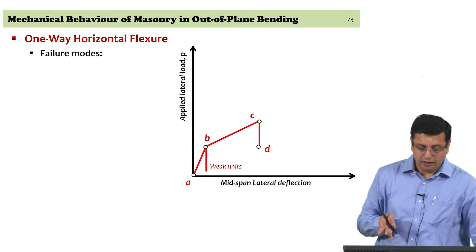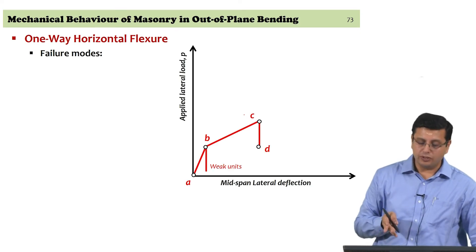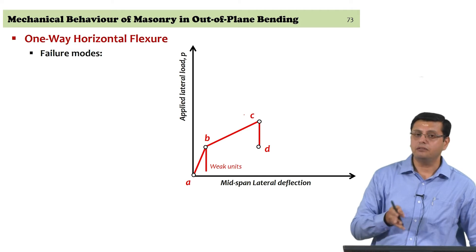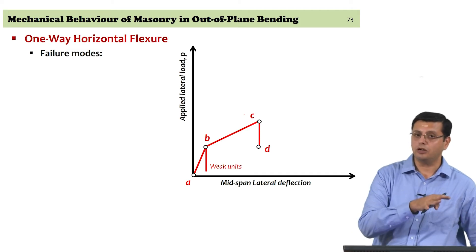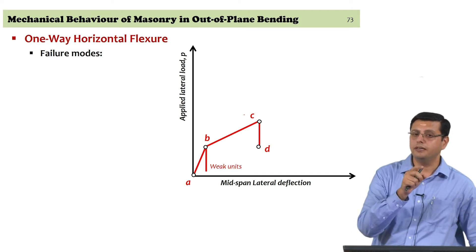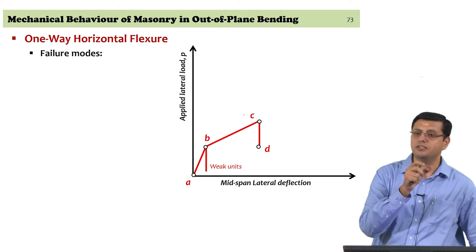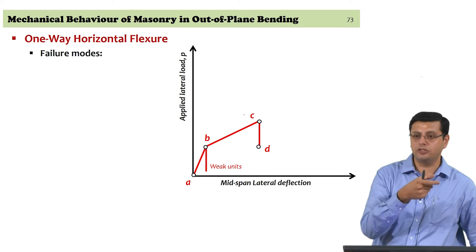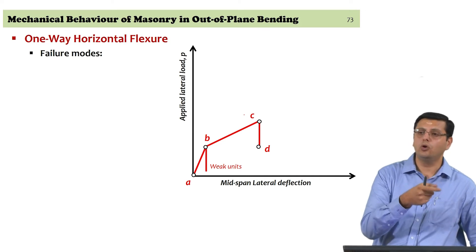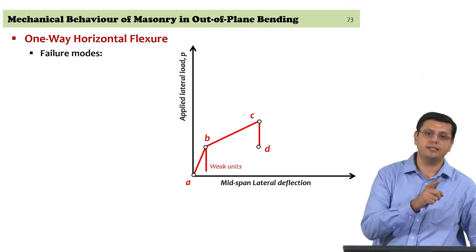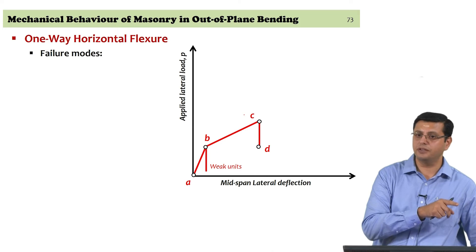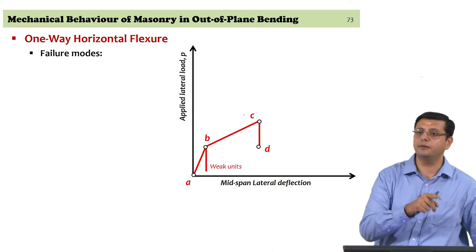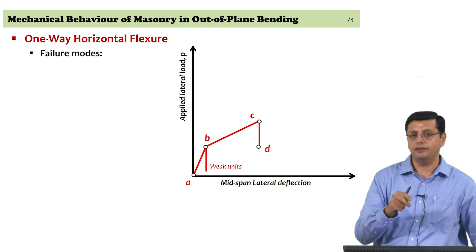Now examining the other situation: the torsional strength of the bed joint being lower than the unit tensile strength was the first case, leading to tooth failure. However, if the reverse is true — the unit tensile strength is really poor and the bed joint strength in torsion (FTP) is fairly good — then you will have what is called a line failure, where the unit is going to be split.